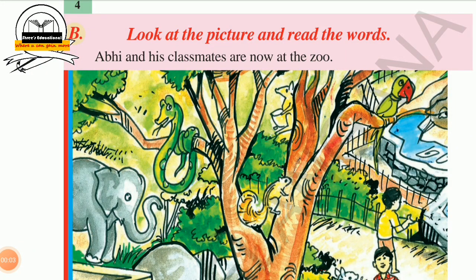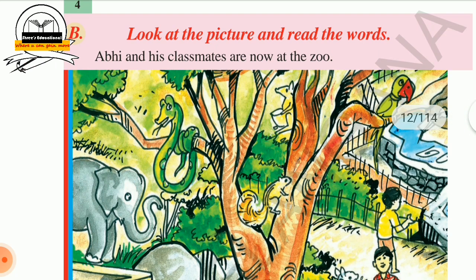We are entering the D part of this first unit. Look at the picture and read the words. Here the picture is given on page number four, so we are entering the fourth page of this first unit. We look at the picture and read the words. Abhi and his classmates are now at the zoo.